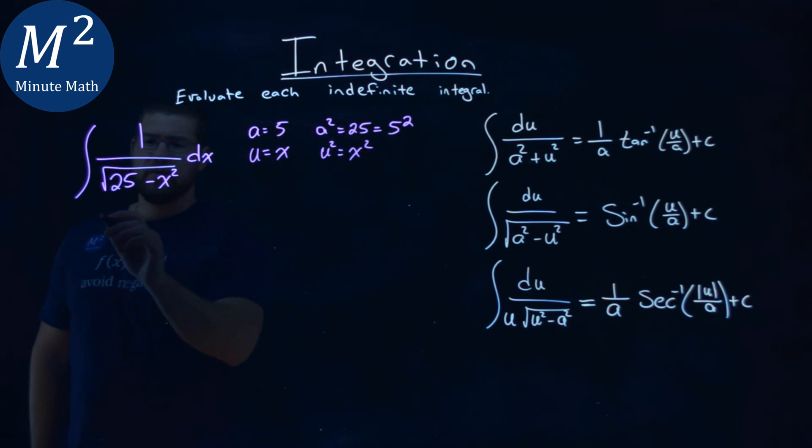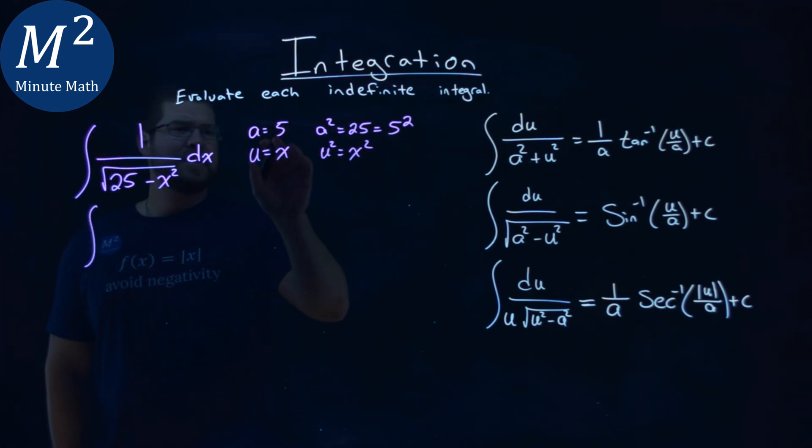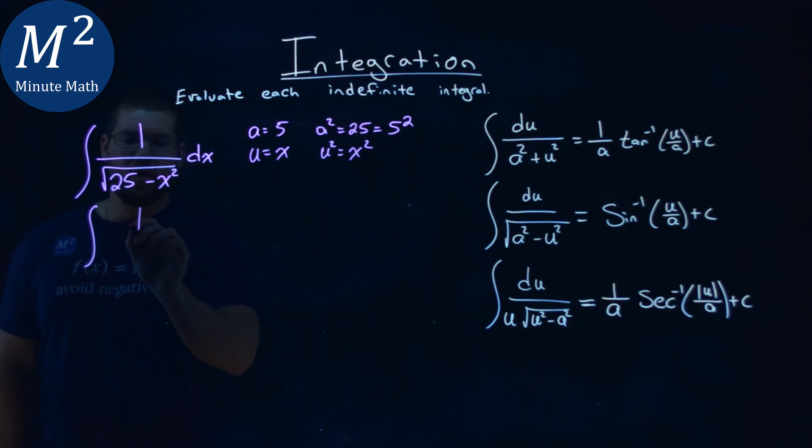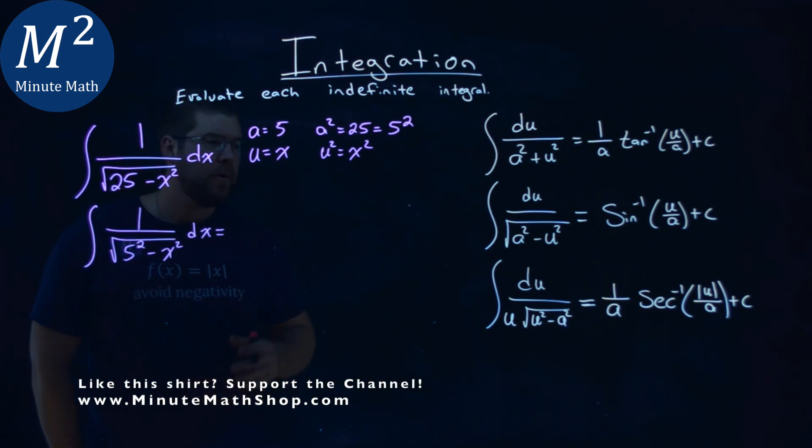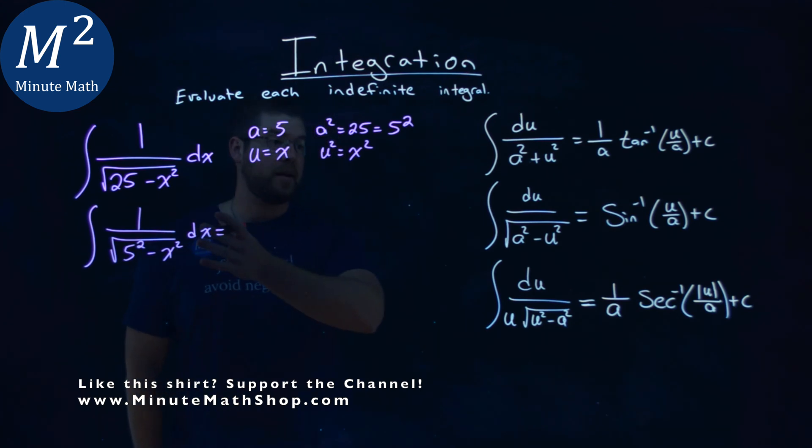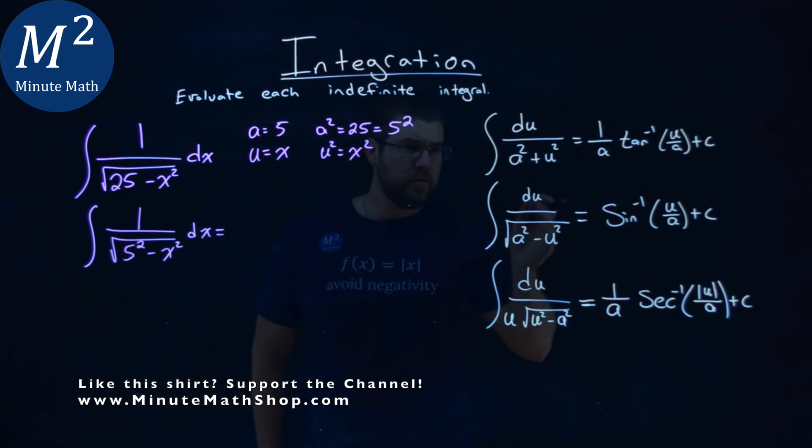So now let's go rewrite this integral with just the a squared being 5 squared. So we have 1 over the square root, instead of 25, I'm going to write it as 5 squared, minus x squared dx. But now it's lined up pretty exactly as our arc sign. So let's use the formula.